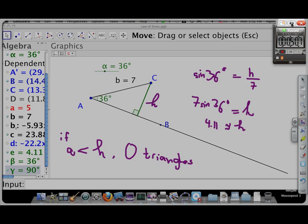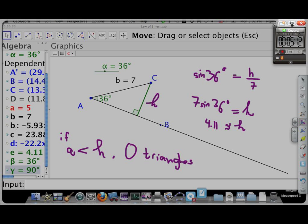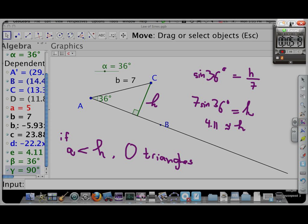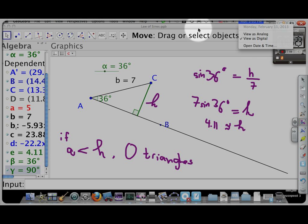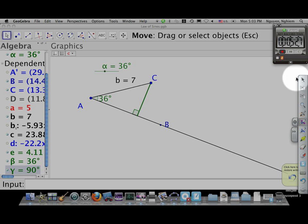So that's the first thing that we can conclude here, that if A is less than H, then no triangles are possible. So let me take a picture of that, and we will proceed on to the next parts of this. So maybe we can make one triangle, maybe we can make two triangles, and we'll figure that out as we continue on with this.